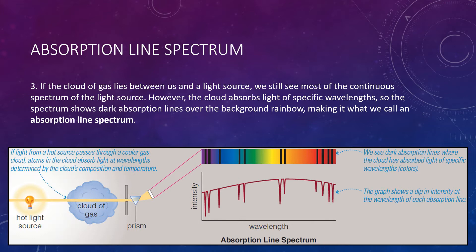The third and final type is the absorption line spectrum. If a cloud of gas lies between us and a light bulb, we still see most of the continuous spectrum of the bulb. However, the cloud absorbs light at specific wavelengths, so the spectrum shows dark bands over the background rainbow — making it an absorption line spectrum. When shown as graphs, absorption lines appear as dips on a background of relatively high intensity, while emission lines look like spikes on a background with little or no intensity.